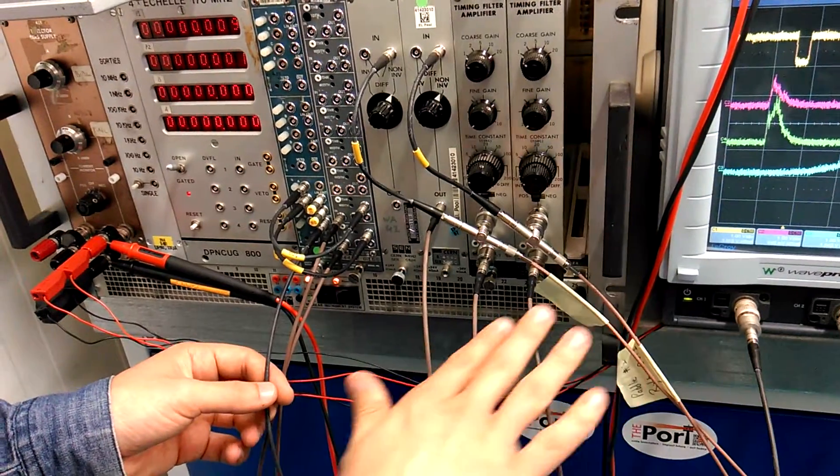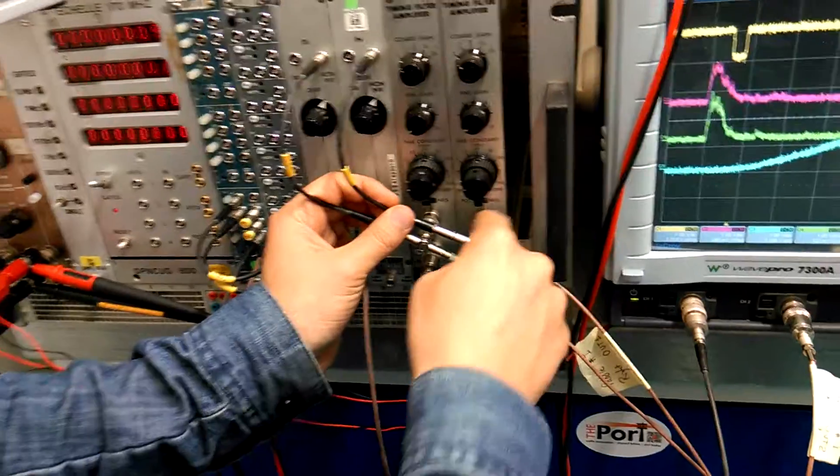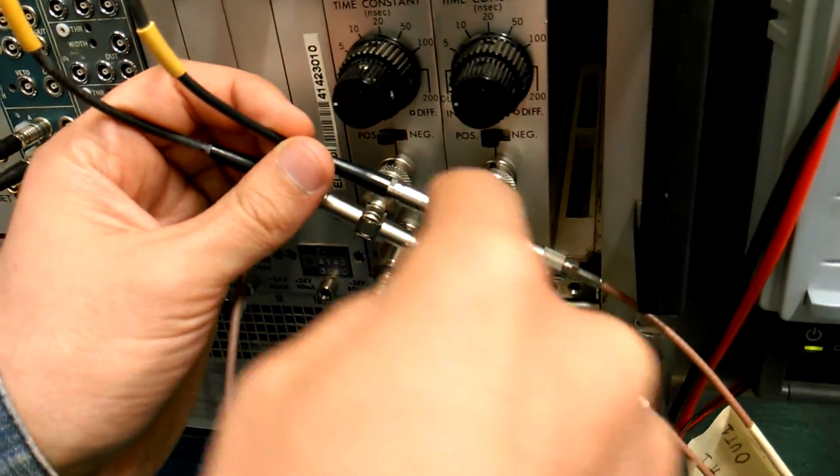That was the non-amplified part. Basically, the same signal, if you can see here we have a T connector, we split the signal into two parts. Then the other part goes to the shaper.